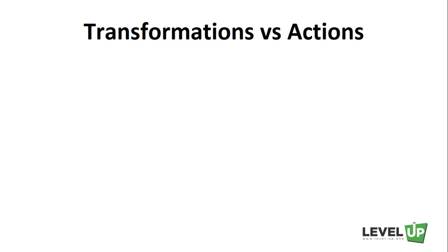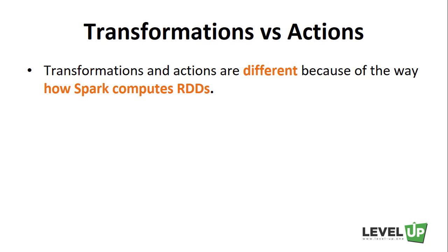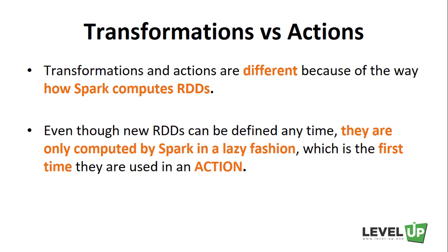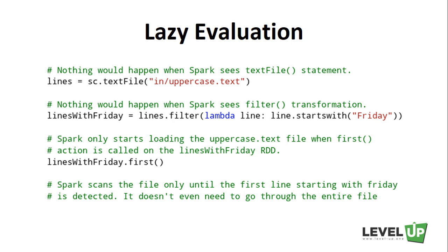Transformations and actions are different because of the way Spark computes RDDs. Even though new RDDs can be defined anytime, they are only computed by Spark in a lazy fashion, which is the first time they are used in an action. Let's take a look at the following example. We load a string RDD from a text file and then filter the lines that start with Friday. If Spark starts to load and store all the data in the file once it sees the loading statement, we will end up wasting a lot of storage space, because we then immediately filter out many lines by applying the filter transformation.